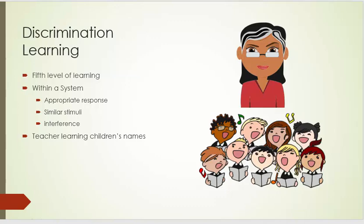Discrimination learning is the fifth level of learning. It is within a system, an appropriate response to similar stimuli, even with interference. A good example of this is children or teacher learning children's names.